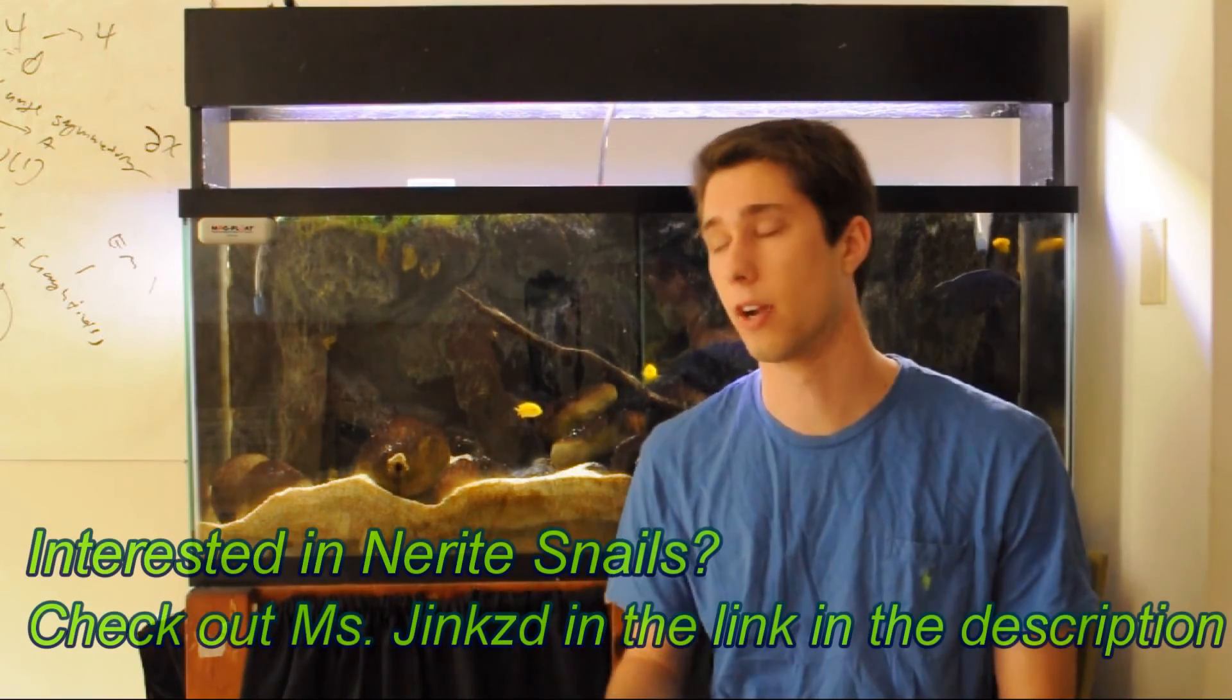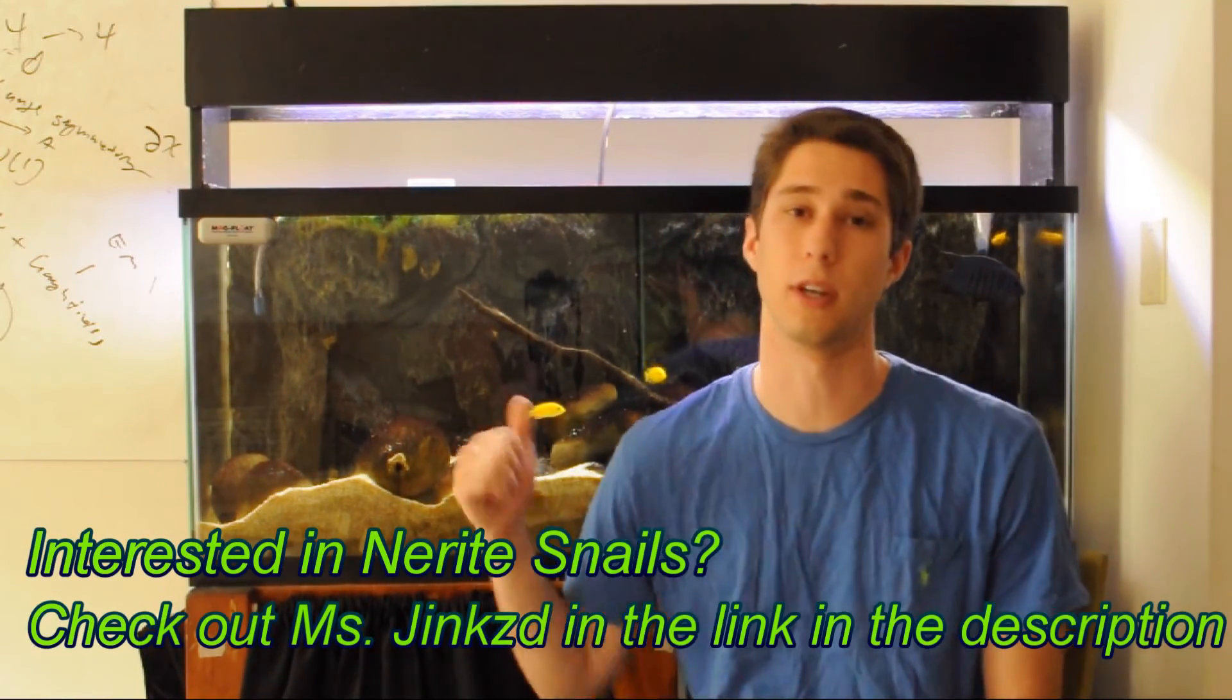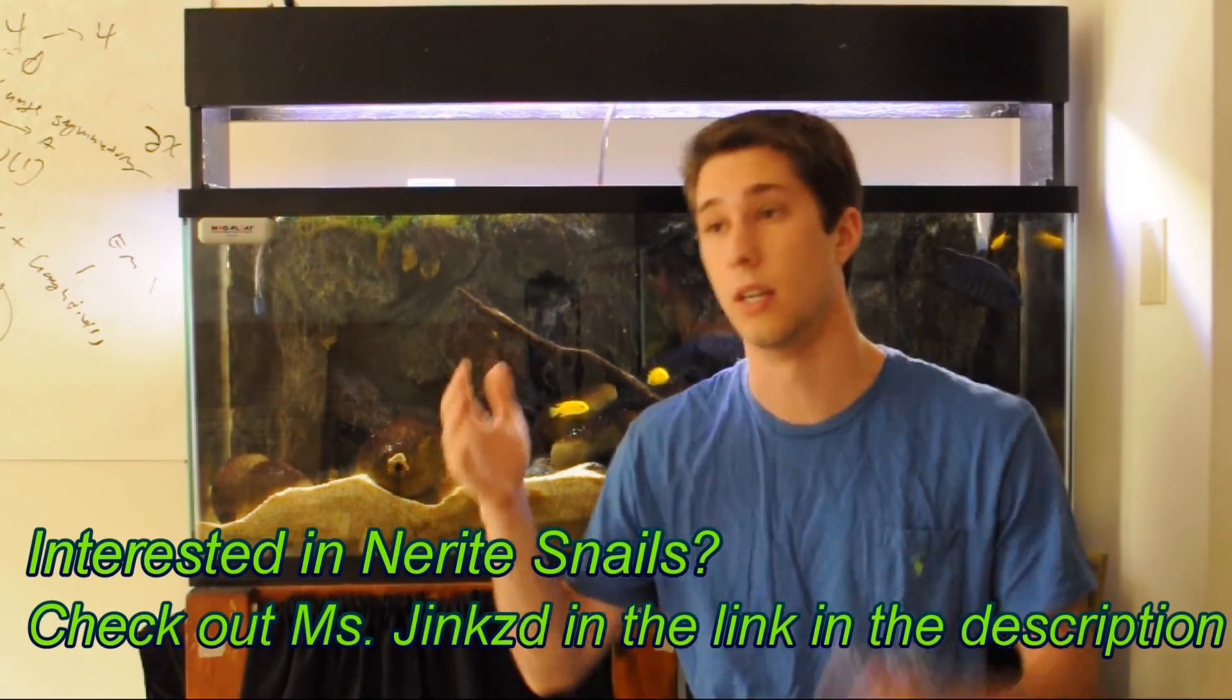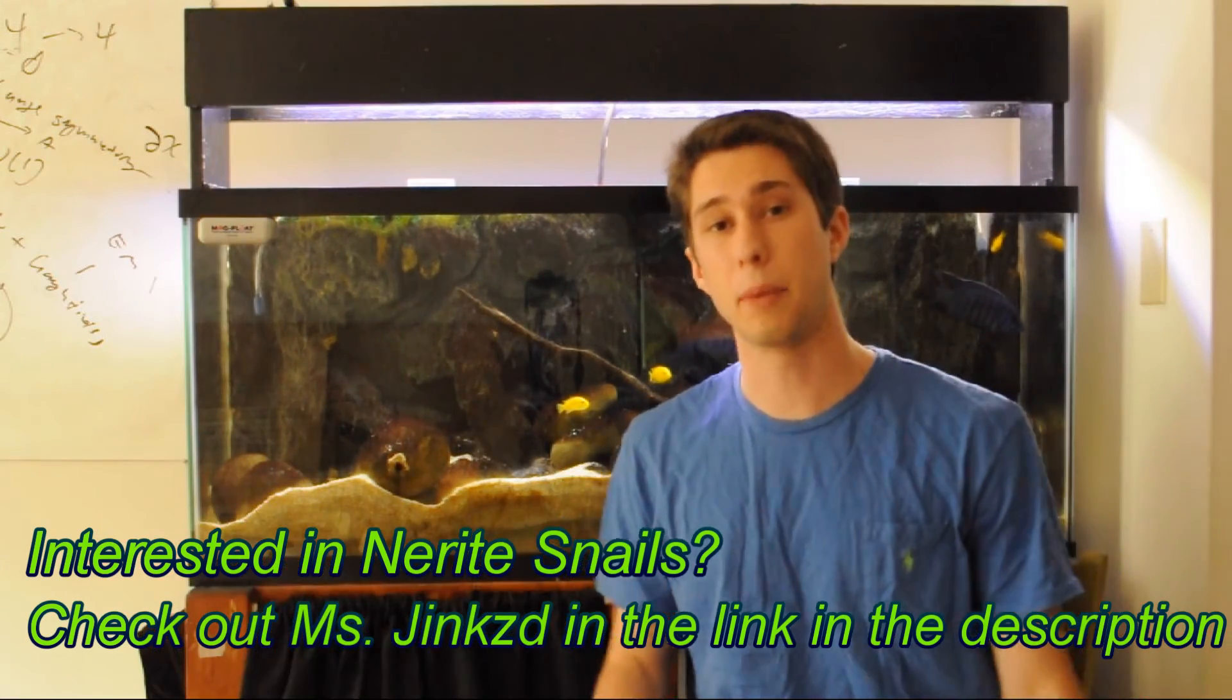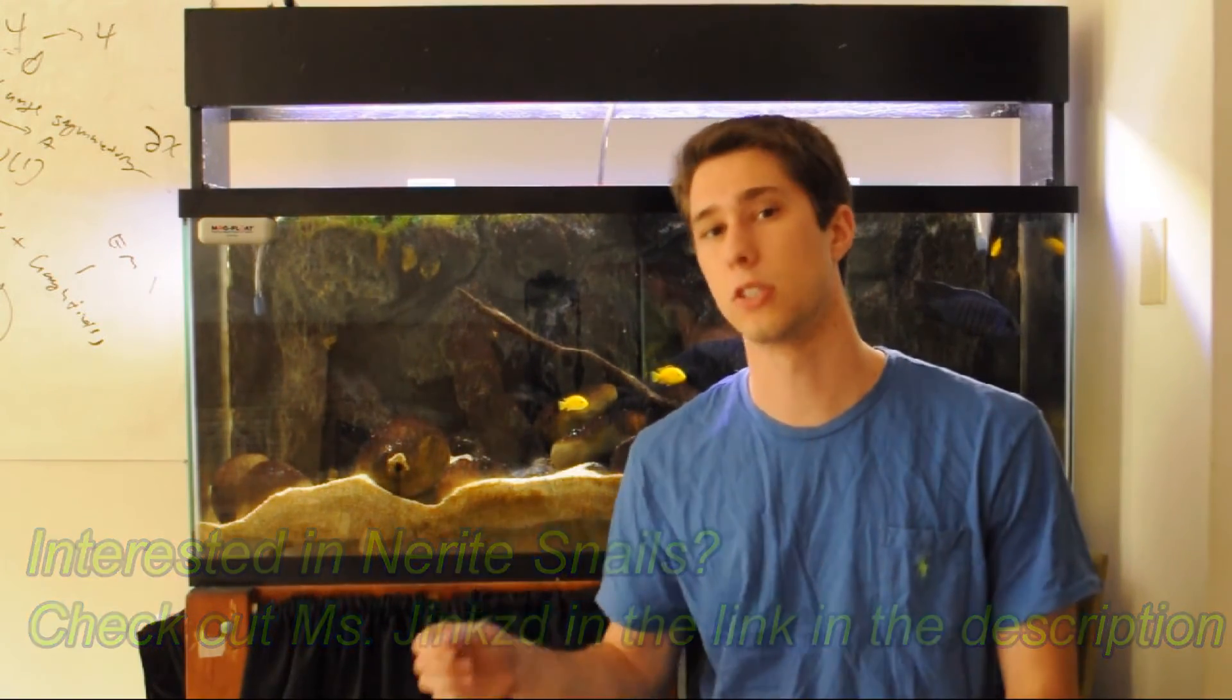They come in a variety of colors. Anything like zebra, tiger, spotted, green. I mean just name a color and there's probably a variation of nerite snail for you. So there you have it. Those are my top three algae eaters in the freshwater aquarium hobby.